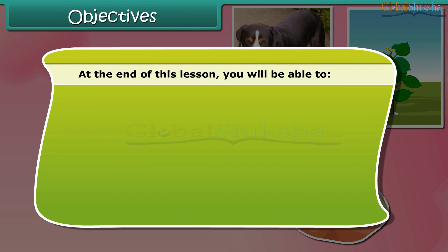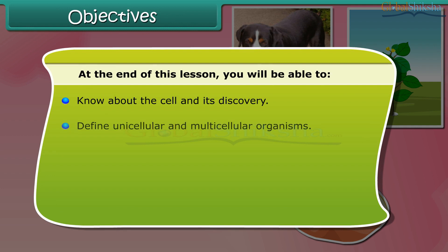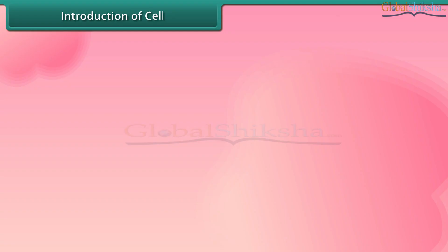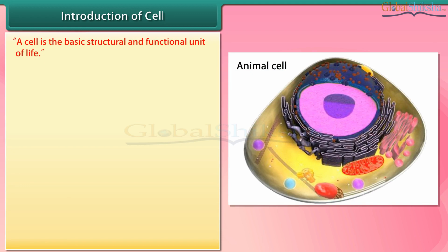Objectives: At the end of this lesson you will be able to know about the cell and its discovery, define unicellular and multicellular organisms, describe the structure of a cell, and explain the structure and functions of the cell membrane, cell wall, cytoplasm, nucleus, vacuole, and plastids. You will also be able to differentiate between the plant and animal cell.